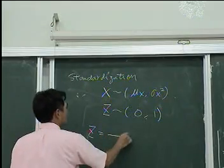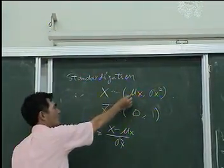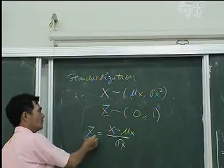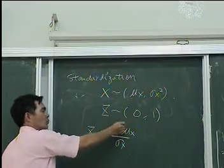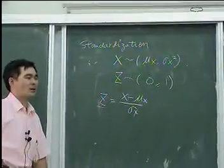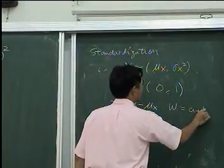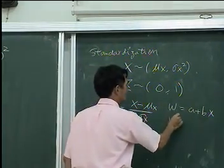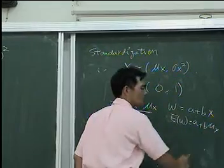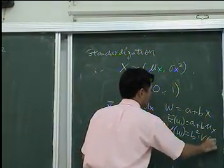The formula is: Z equals X minus mu X, divided by sigma X. If X has mean mu X and variance sigma X squared, and Z looks like this, then the mean of Z will be 0 and the variance will be 1. We will now verify this using the relationship: when W equals A plus BX, expectation of W equals A plus B·mu X, and variance of W equals B squared times V(X).